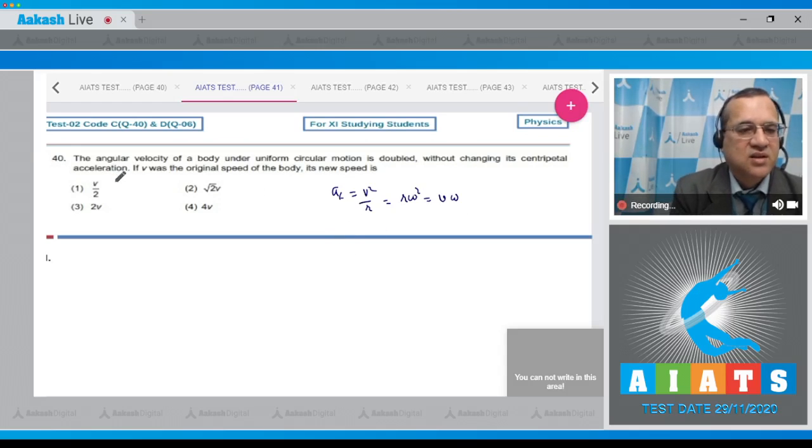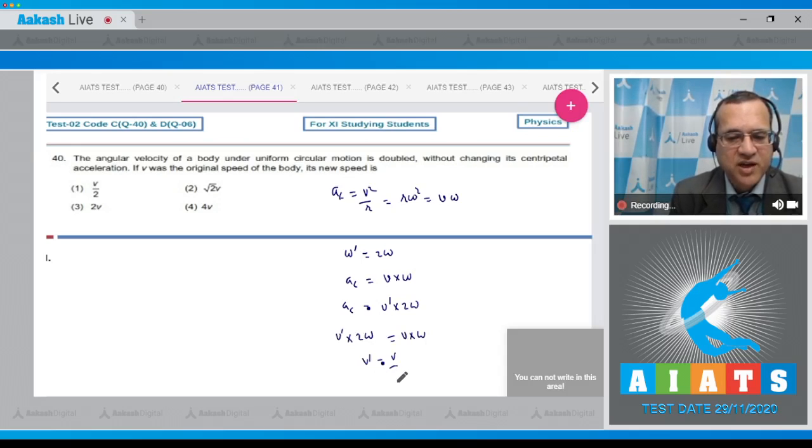Angular speed is doubled. So omega is changed to 2 omega. The first, this is equal to v into omega, and whereas in second case, this is equal to v prime into 2 omega. AC are equal given. So v prime into 2 omega is equal to v into omega. Therefore, v prime is equal to v by 2.